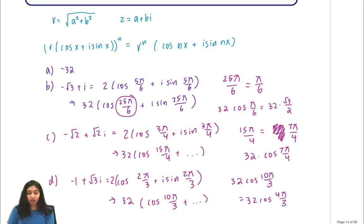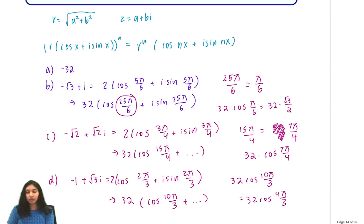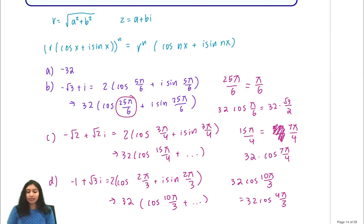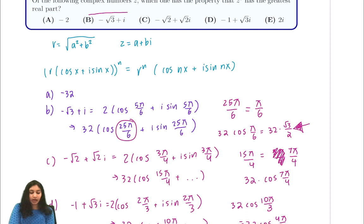So now we have all these expressions and we're trying to find which one has the greatest real part. When you evaluate all of them, you'll see that 32 times the square root of 3 over 2, which is from here in part B, this was our largest. So our answer is B, which is negative root 3 plus i.